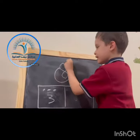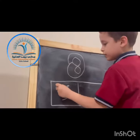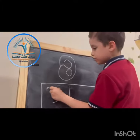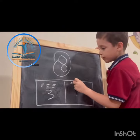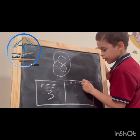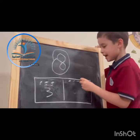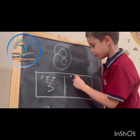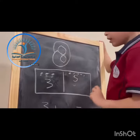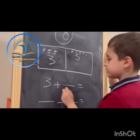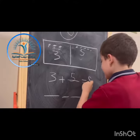Here, 8 is the bigger number. Count: 1, 2, 3. After 3: 4, 5, 6, 7, 8. Stop, stop. Only 8. Here, we'll put 5. 3 plus 5 equals 8.